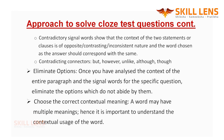The second type of signal word we need to be careful about is the contradictory signal word. Contradictory signal words show that the context of two statements or clauses in the paragraph is opposite, contrasting, or inconsistent in nature. These words help us decide what kind of answer to choose for the blank. Commonly used contradictory signal words are: but, however, unlike, although, and though.